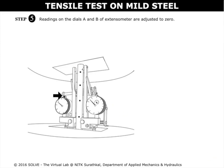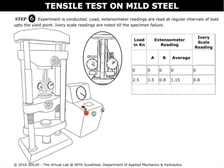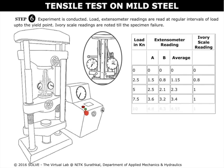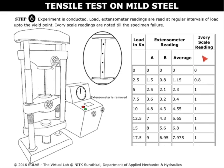Click on the adjusting knobs of the extensometer to adjust the readings to zero. Switch on the machine and start the loading process. The readings of the extensometer as well as the ivory scale readings are noted.